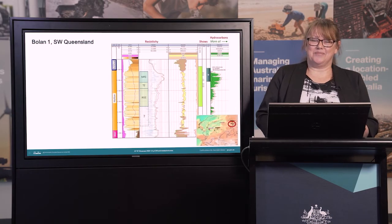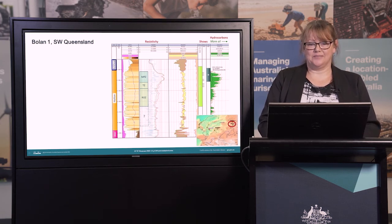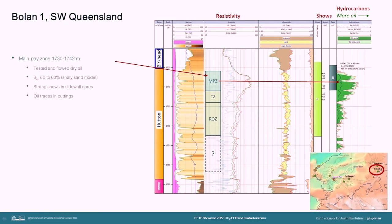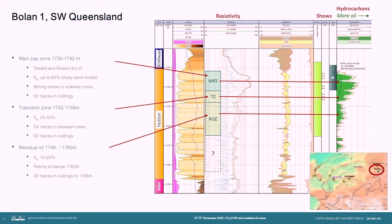Another confirmed example of a residual oil zone can be seen in Boilan 1, which is a smaller field with just a few million barrels of oil in place. The main pay zone has an oil saturation of about 60 percent based on the Shaley Sand analysis, and the petrophysical analysis is really supported very well by oil shows. Both the Archie and Shaley Sand analysis are very much in agreement in this case. Below this we have a transition zone with a reduced oil saturation of between about 20 and 50 percent, and finally we have a pretty well-defined residual oil zone with a calculated oil saturation of about 10 to 20 percent, again supported well by oil shows.